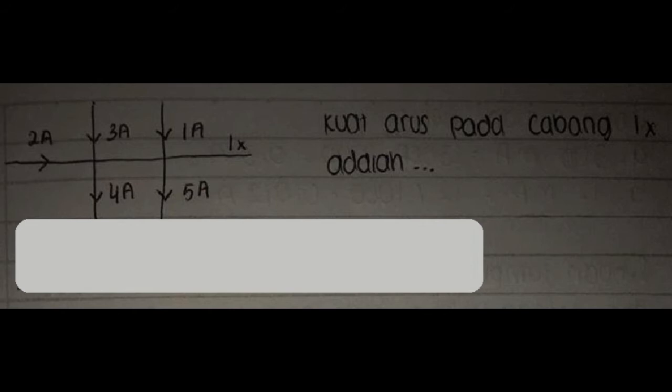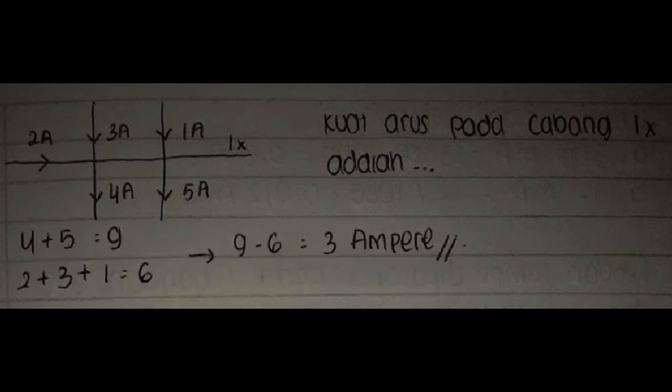Soal 10: Kuat arus pada cabang IX sama dengan? Jawaban: 4 plus 5 sama dengan 9; 2 plus 3 plus 1 sama dengan 6; 9 minus 6 sama dengan 3 ampere.